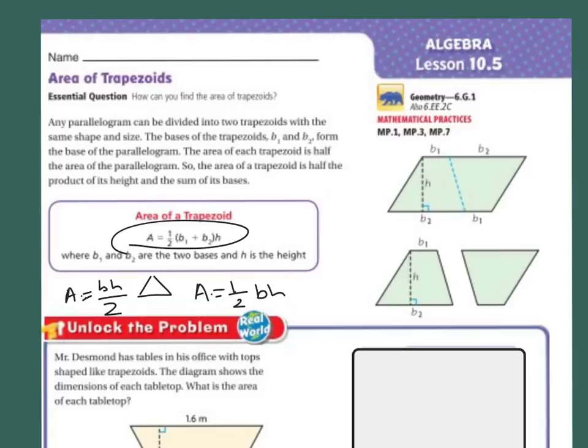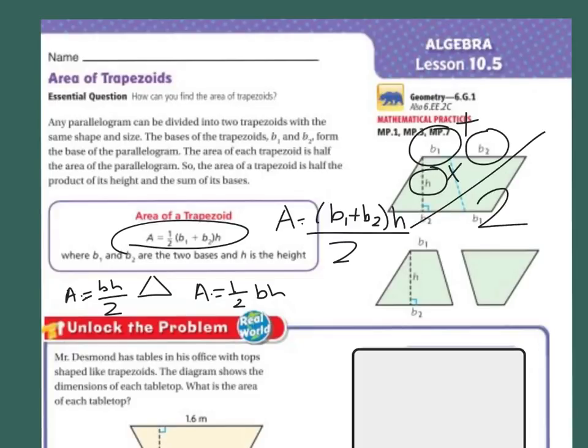So I'm going to kind of rewrite this one too just because I think it's a slight bit confusing. So I would say area equals the base 1 plus the base 2 times the height, and then you're going to divide that by 2. So you'll add base 1 to base 2, then you're going to times the height, and then you're going to divide that answer by 2. And that's how you're going to get the area of a trapezoid.